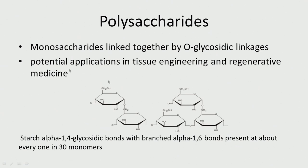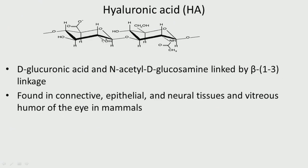Starch, for example, has the alpha 1,4 linkage and the 1,6 linkage occurs once in every 30 units. When we have 1,6 linkage you are going to have branching. If it is totally 1,4 then it is going to be very linear and crystalline. When you have branching it becomes a little bit amorphous and less crystalline.